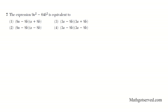The expression 9a squared minus 64b squared is equivalent to... This is a factorization problem. So we have a difference of squares here. How do I know it's a difference of squares? Well, the first and second terms are perfect squares. 9 is a square, a squared is a square, 64 is a square, and b squared is a square.